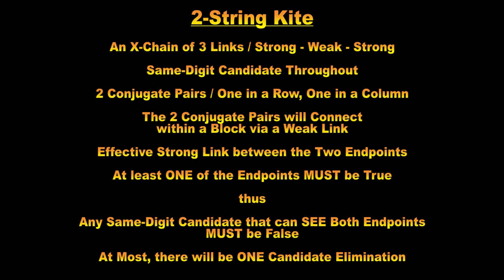A two-string kite is an X-chain of three links — strong, weak, strong — using the same digit candidate throughout. It is composed of two conjugate pairs with one in a row and one in a column. The two conjugate pairs will connect within a block via a weak link. This creates an effective strong link between the two endpoints, which means at least one of those endpoints must be true.